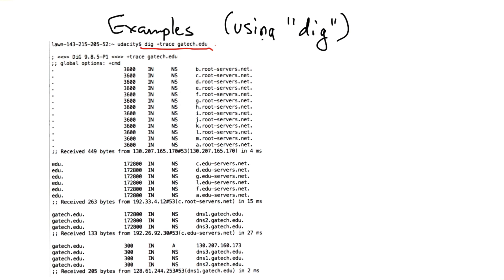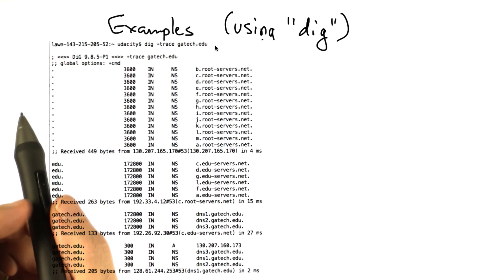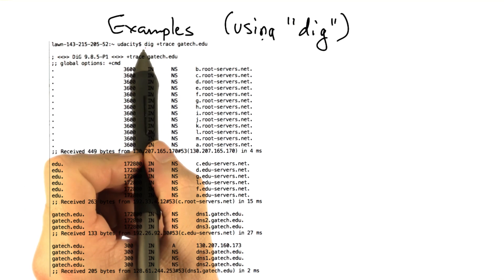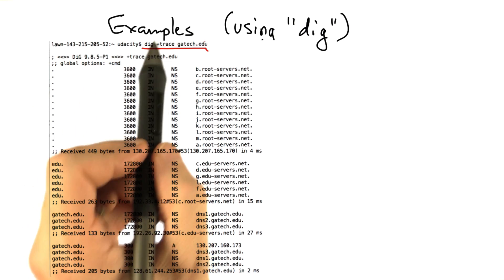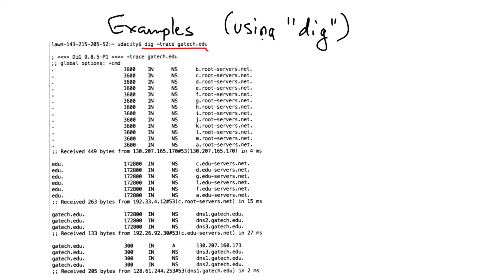Let's put everything together now by looking at a trace of an entire lookup. In the examples before, we didn't get to see the full lookup hierarchy because we issued a recursive query. But let's suppose that we wanted to see every step of the DNS lookup process. You can do this by using the trace option in dig.